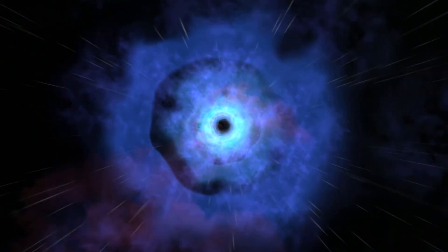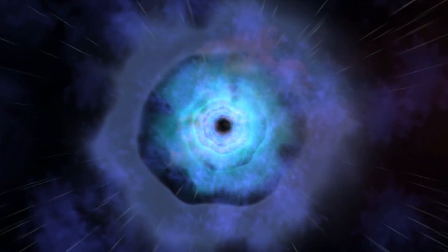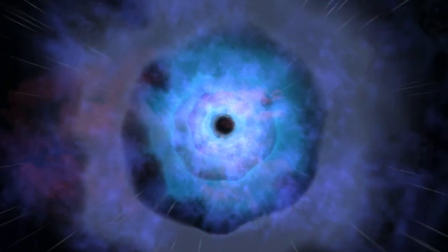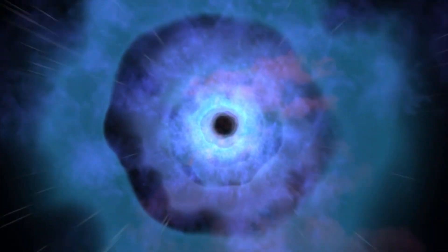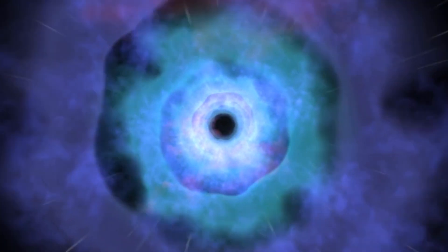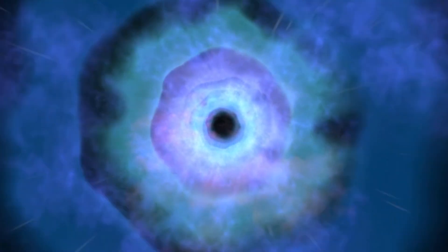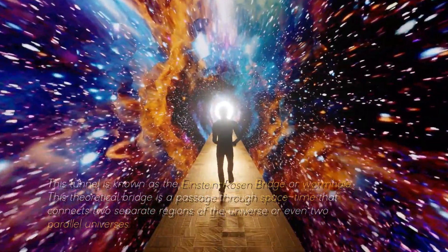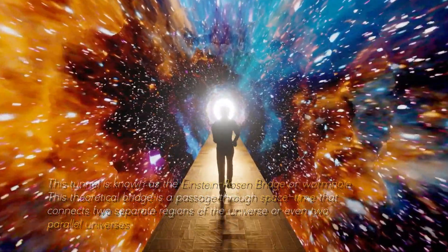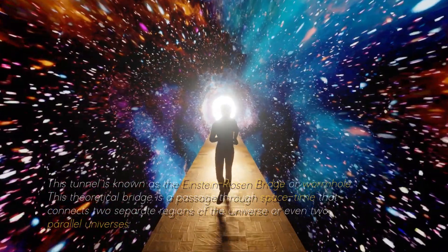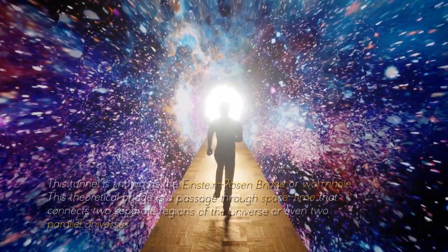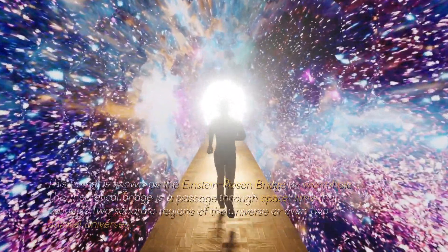You're probably wondering what lies beyond the third layer called the singularity, right? The idea is that, instead of being crushed by falling into a black hole, one would be sucked through a tunnel through the ring of fire and emerge through a white hole somewhere else in a parallel universe. This tunnel is known as the Einstein-Rosen Bridge, or wormhole. This theoretical bridge is a passage through space-time that connects two separate regions of the universe or even two parallel universes.